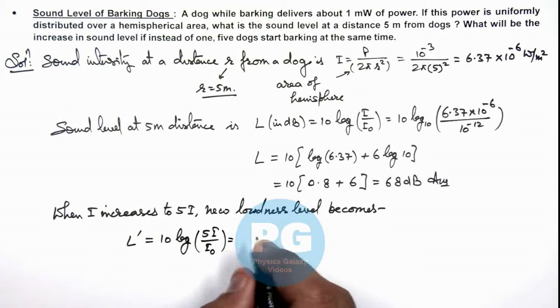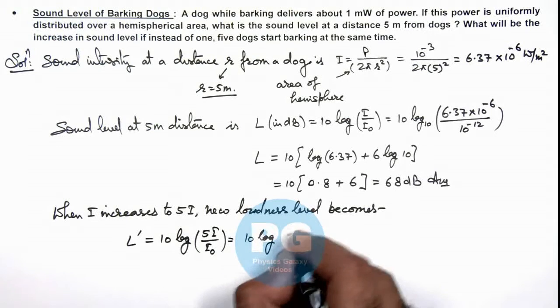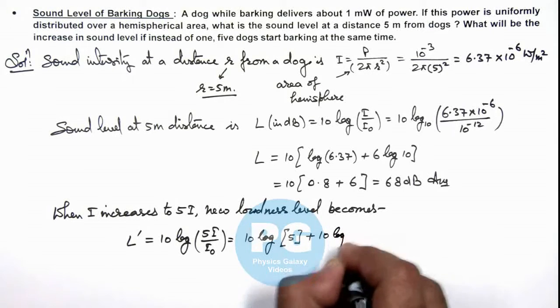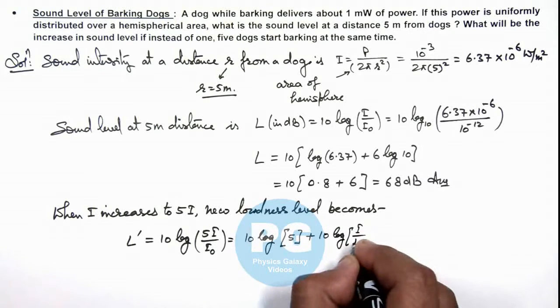This will be 5 times i by i₀, so this is log of 5 plus 10 log of i by i₀.